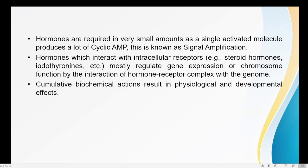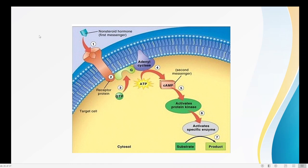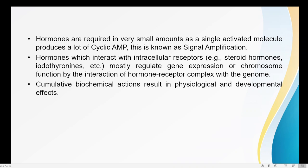Most hormones are produced in very tiny quantities — often as a single activated molecule. A single activated molecule produces a lot of cyclic AMP; one hormone produces not just one but several cyclic AMP molecules. This process is known as signal amplification. When a hormone binds with the receptor, it causes the formation of several cyclic AMP molecules, amplifying the signal many times over.